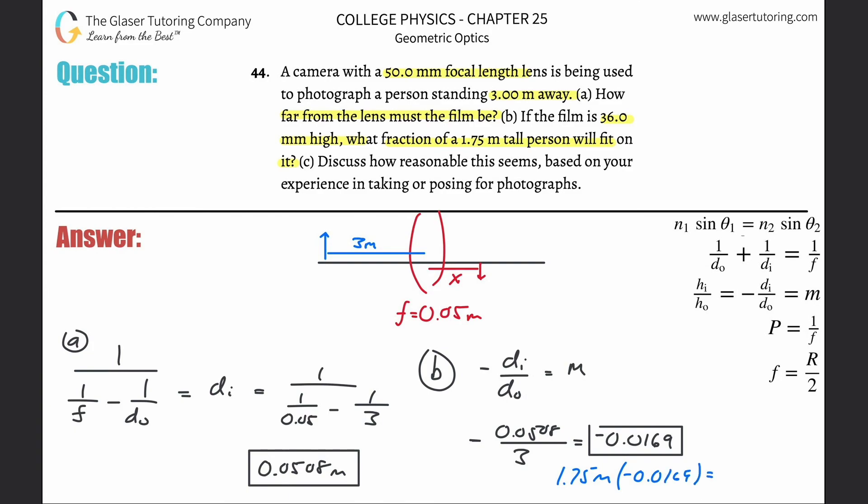And what we will find is when we do that, plug it into the calculator, we're going to get about 0.03 meters, and it'll be negative. So what this is telling us is that the image height is going to be inverted because it's negative.